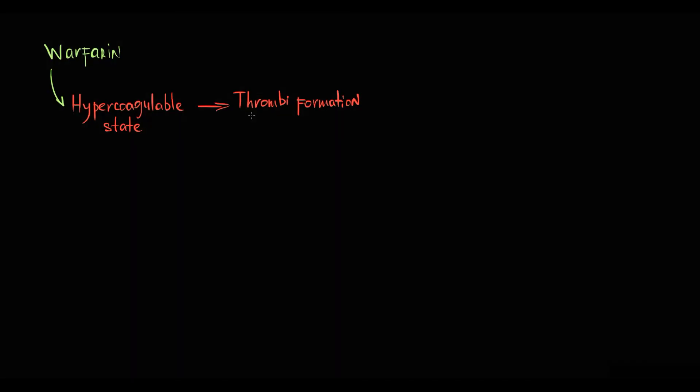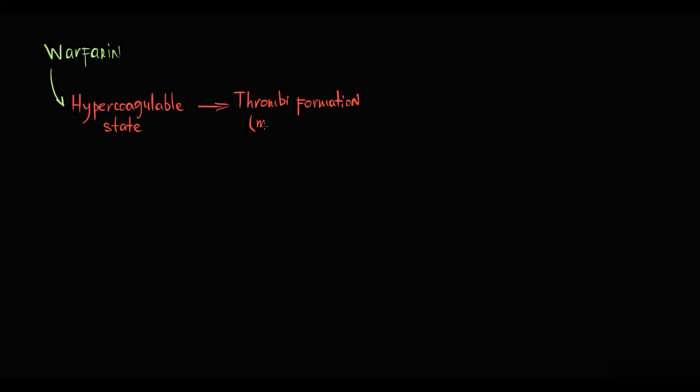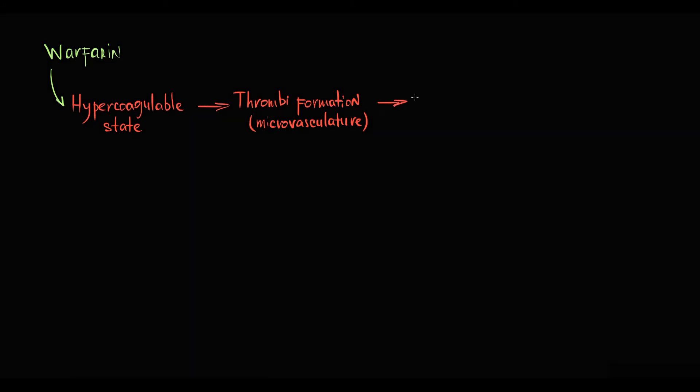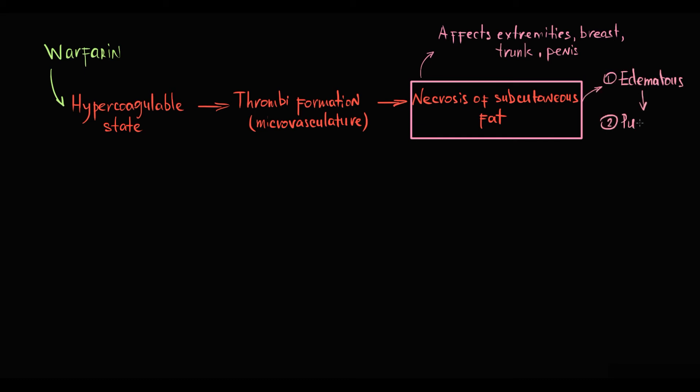The mechanism is that thrombi usually form in the microvasculature, usually in capillaries and venules. And thrombotic occlusions of the microvasculature result in necrosis of the subcutaneous fat. Most commonly it affects extremities, but also it can develop on the breast, trunk, and penis. If left untreated, affected areas become edematous, then purpuric, and then tissue necrosis develops, which potentially can lead to gangrene.